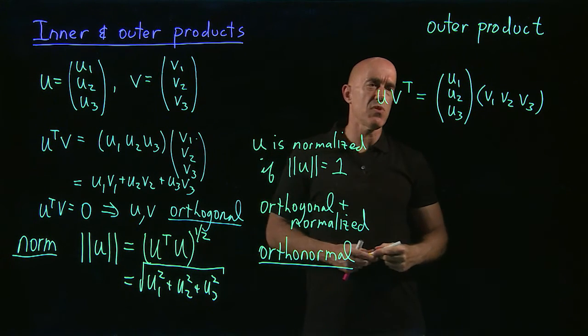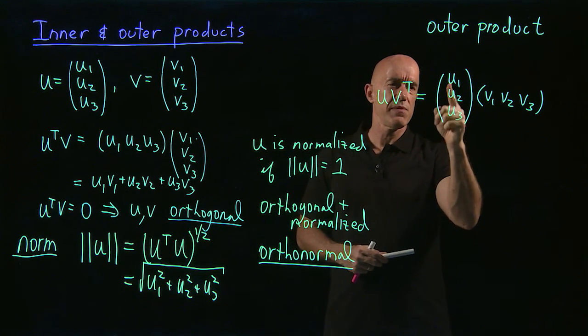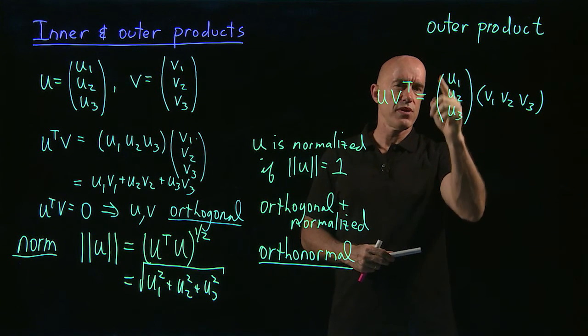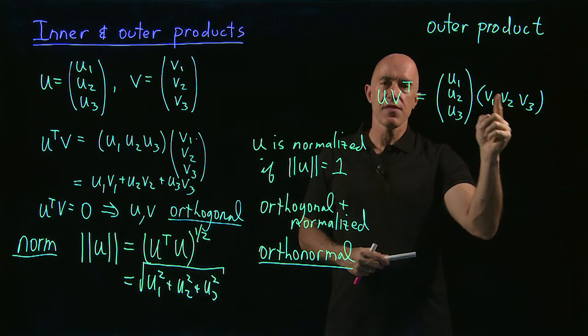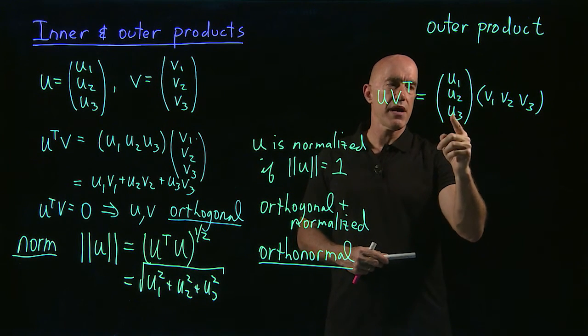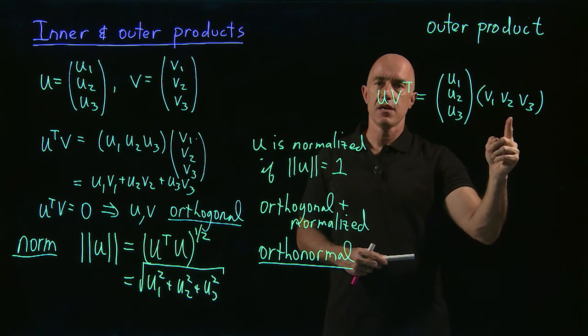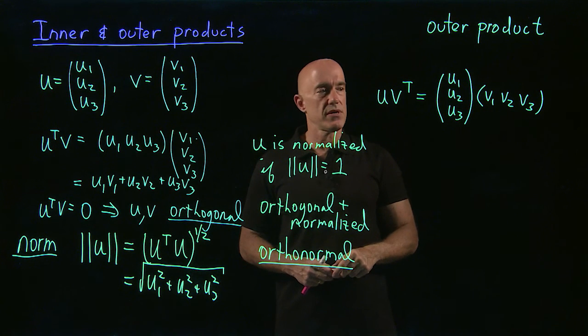So it's this funny multiplication, right? So what is this? This is three by one, right? Three rows, one column. Three by one. This is one by three. One row, three columns. Three by one times one by three is three by three. So this is a three by three matrix.